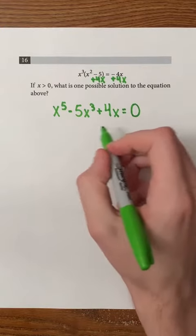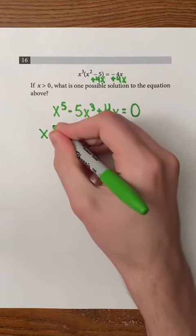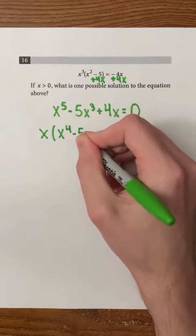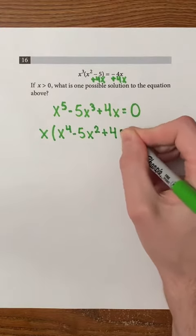Now, we're going to factor x from the left side of the equation to end up with x times the expression x to the power of 4 minus 5x squared plus 4.